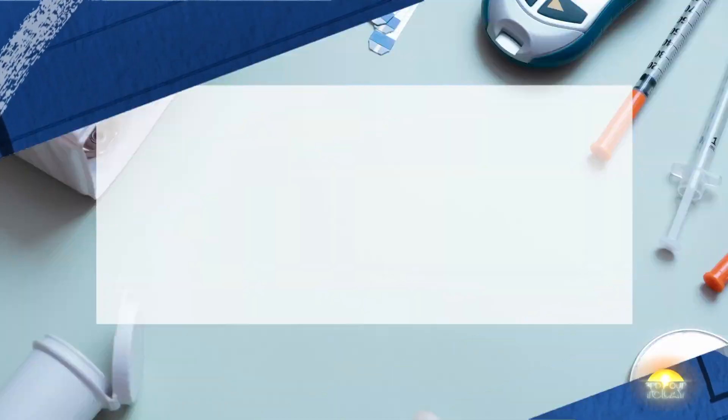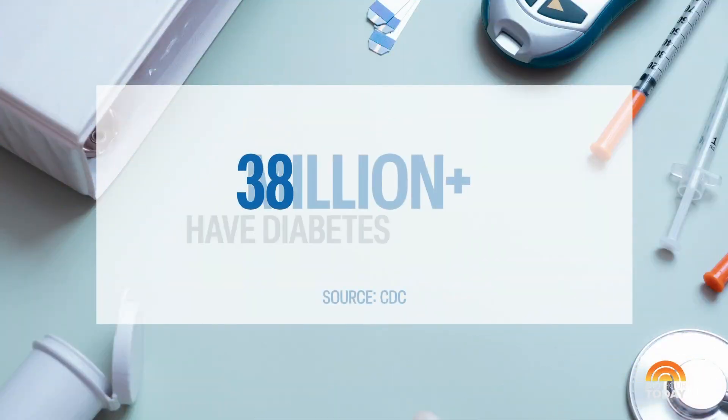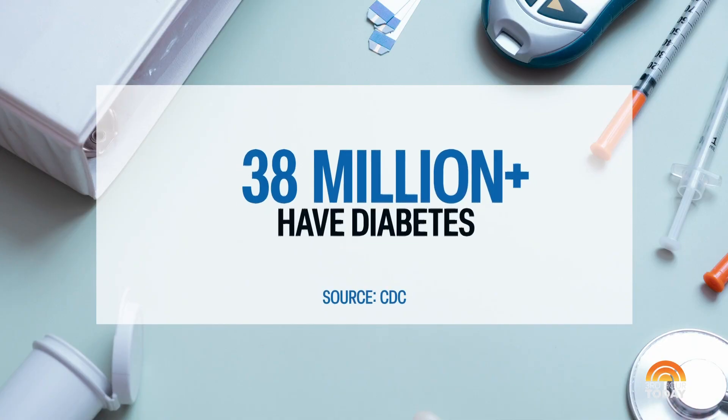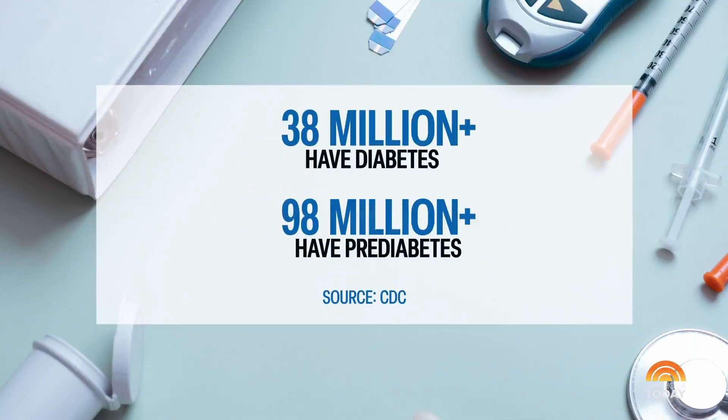November is Diabetes Awareness Month and the CDC says more than 38 million Americans have diabetes and another 98 million are pre-diabetics. So this morning in today's checklist we're going to break down how to define and manage the disease, and here to help us do that is Dr. Jen Cottle. She's a family physician and also associate professor at Rowan University.